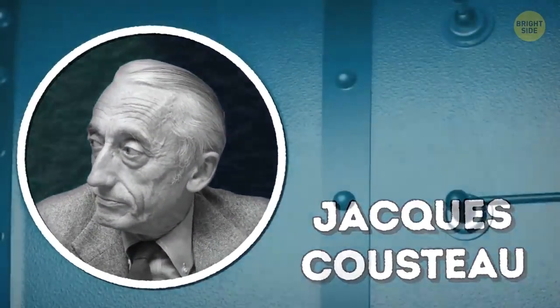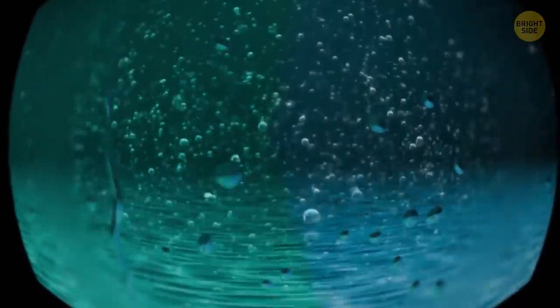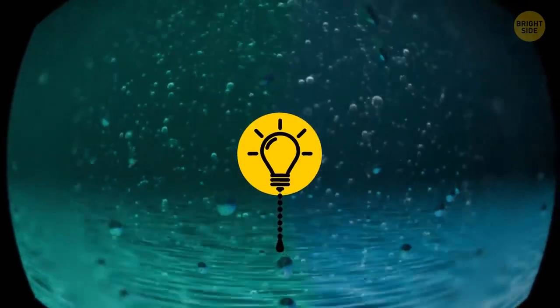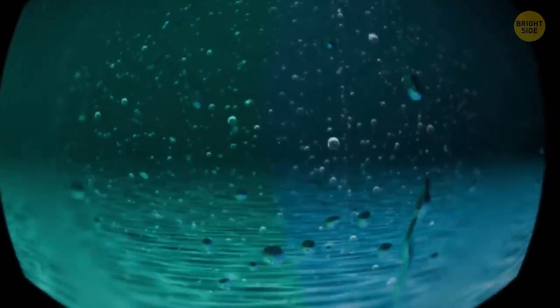The famous explorer Jacques Cousteau found this when he was deep diving in the Straits of Gibraltar. The layers of water with different salinity looked like they were divided with a transparent film, and each layer had its own flora and fauna.